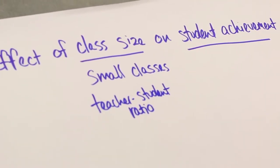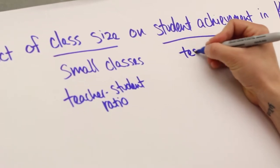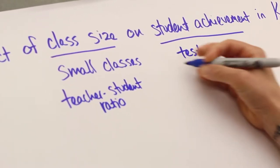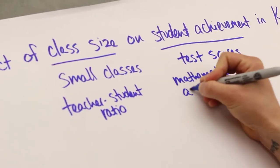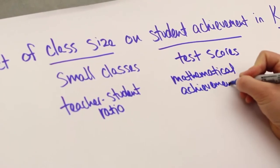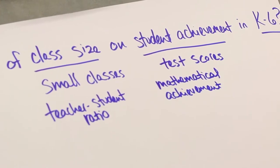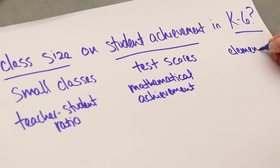Student achievement could be referred to in any number of ways, such as test scores or mathematical achievement. K-6 could be each grade individually or referred to as elementary or even middle school or junior high, depending on the author of the article.